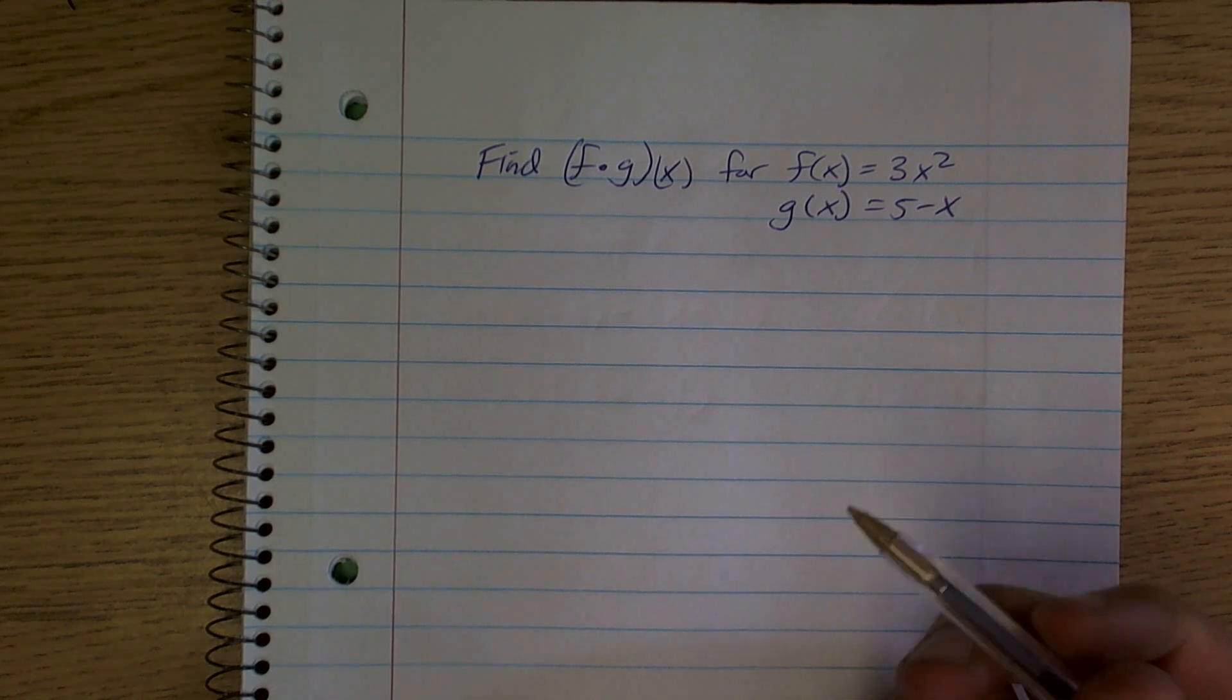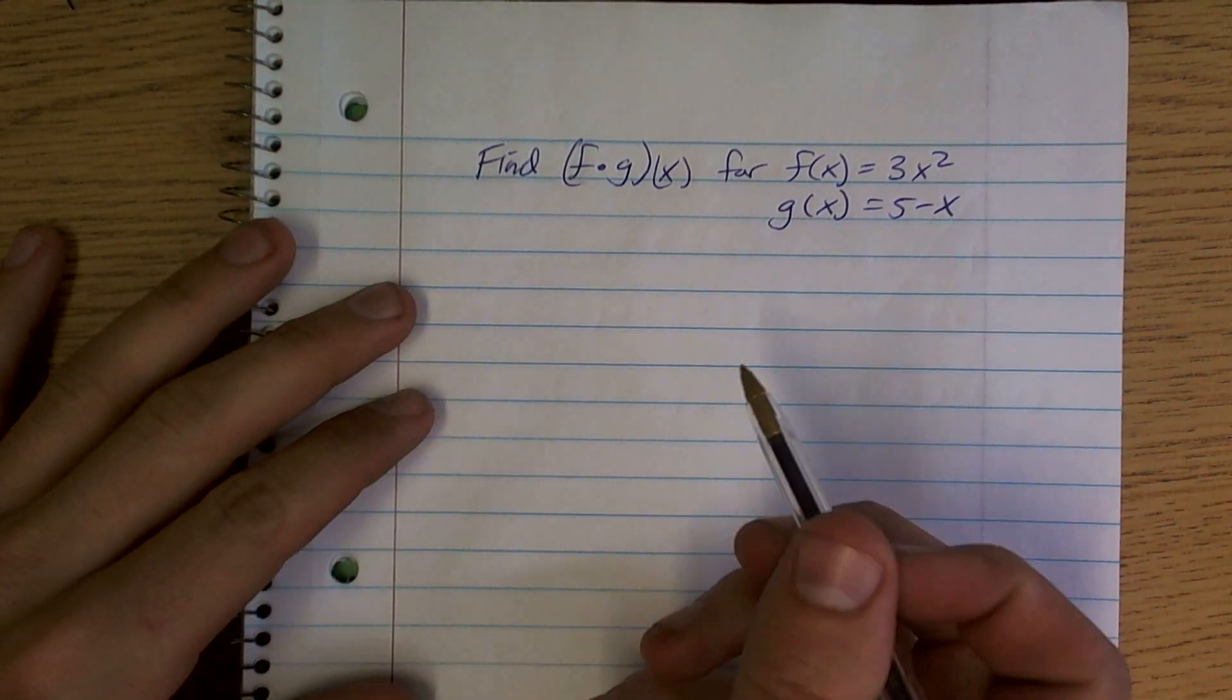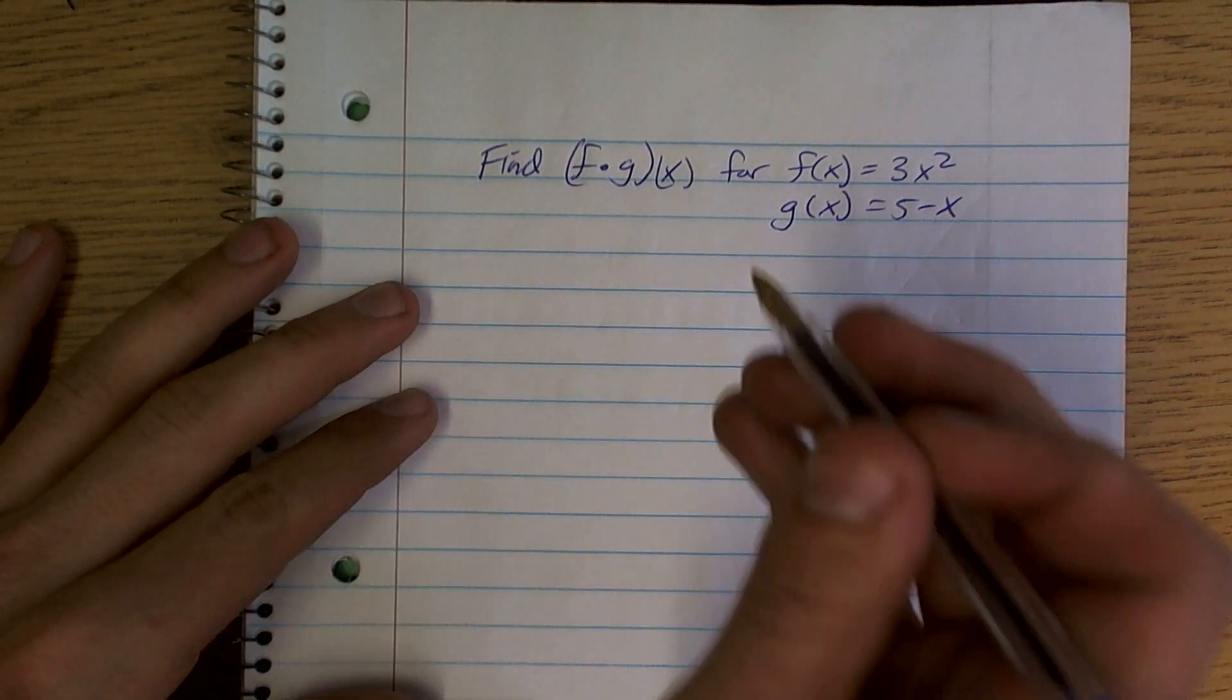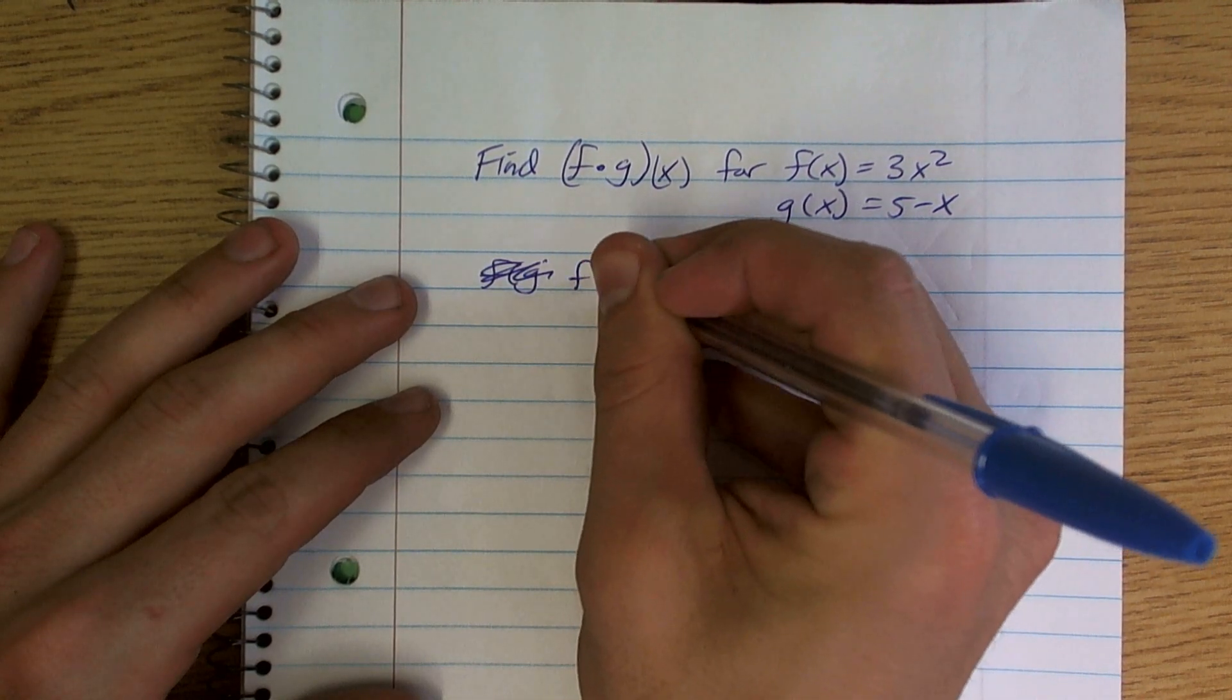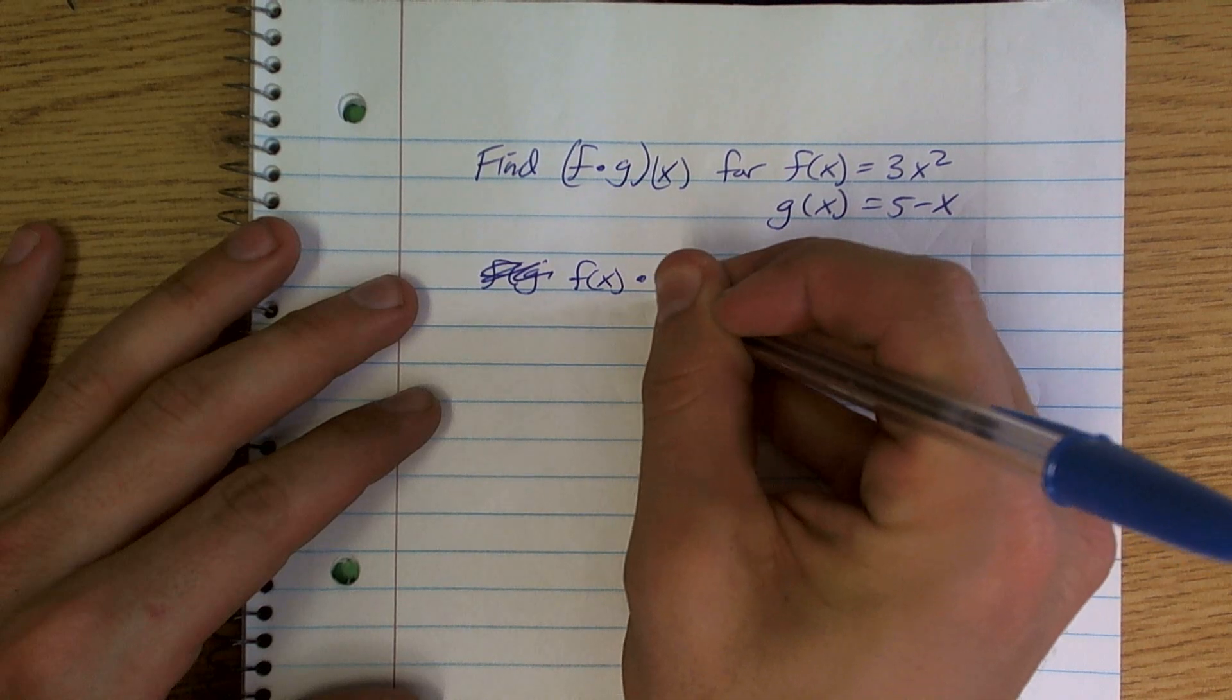The main important thing that we want to make sure we remember is, so they're having us multiply these two functions. f times g of x is the same thing as just saying f of x times g of x.